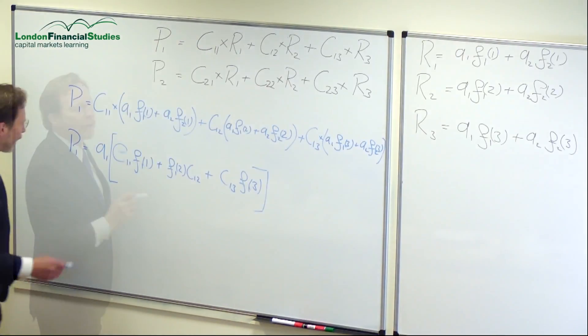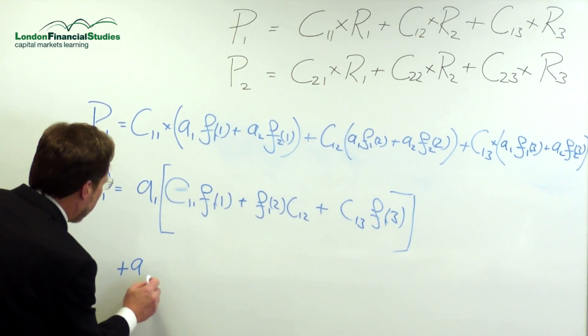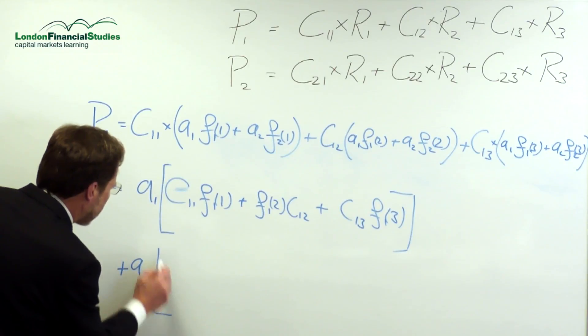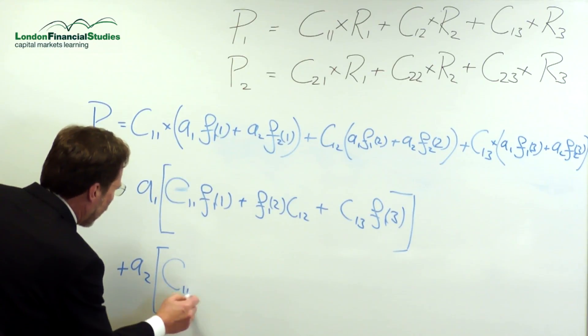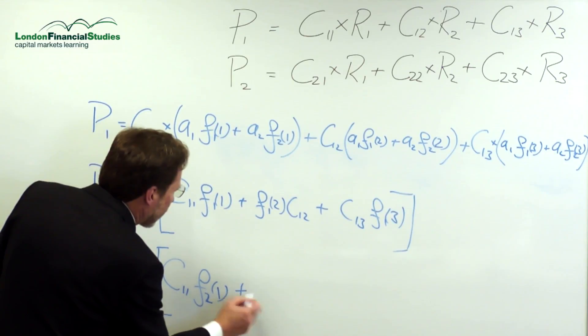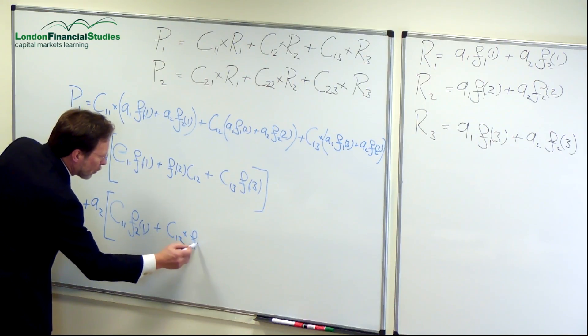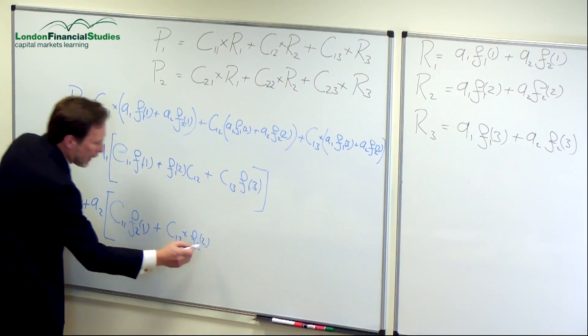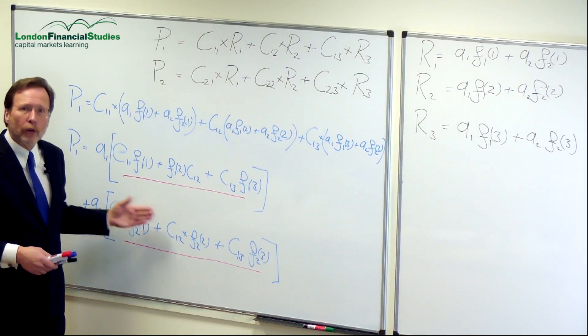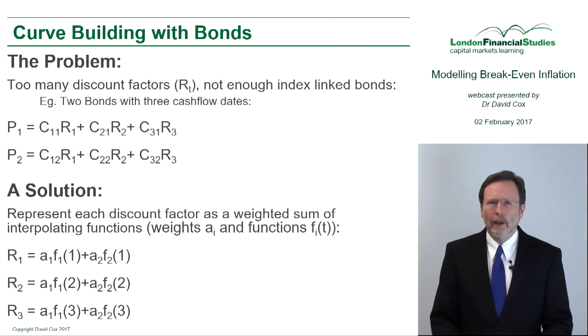We could do the same thing for the terms that multiply by A2. So you can see C11 multiplied by F2 at time 1 plus C12 multiplied by F2 at time 2.